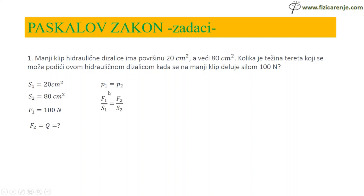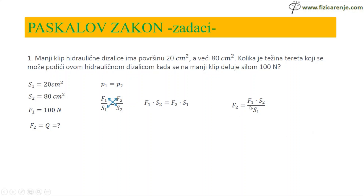P1 je jednako P2. Umjesto P1 pišemo F1 kroz S1, umjesto P2 — F2 kroz S2. Unakrsnim množenjem dobijamo F1 puta S2 je jednako F2 puta S1. Iz ovog obrasca treba da dobijem čemu je jednako F2. S1 je sa ove strane množilo, kada pređe na drugu stranu delit će, pa ću dobiti da je F2 jednako F1 puta S2 kroz S1.